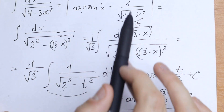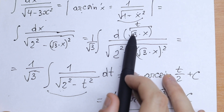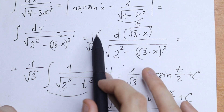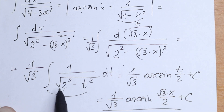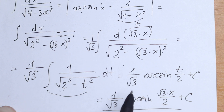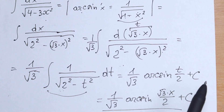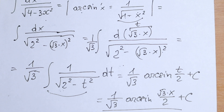So we simplified this by using the arcsine formula — it looks like that. Step by step, putting square root of 3 times x into our differential, we get the formula in terms of t, and then substitute back. If you have any questions or suggestions, leave them in the comments. Thank you so much for watching, and see you in the next video.